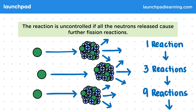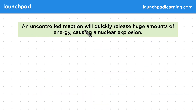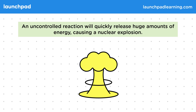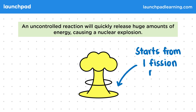But why is an uncontrolled chain reaction so dangerous? An uncontrolled reaction will quickly release huge amounts of energy, causing a nuclear explosion. Nuclear weapons work by facilitating uncontrolled nuclear reactions. In a nuclear explosion, all of the energy released will originate from a single nuclear reaction. The explosion will also throw out the unstable byproducts of fission, leading to irradiation and contamination.